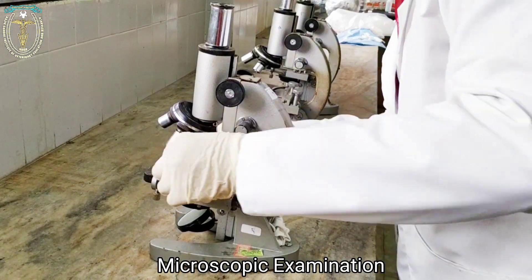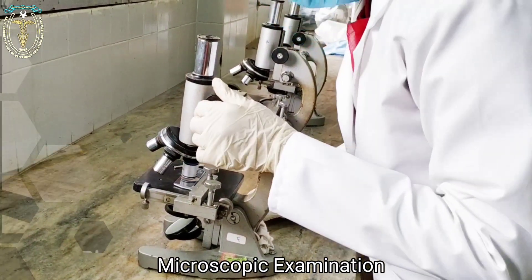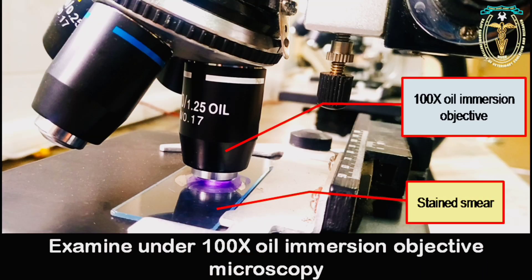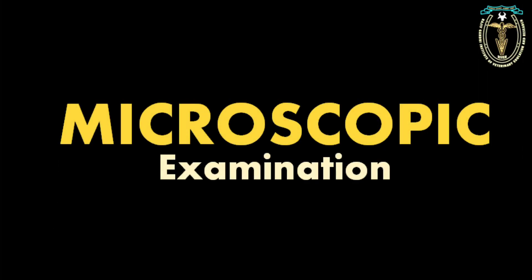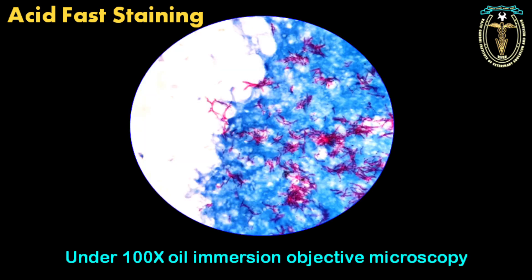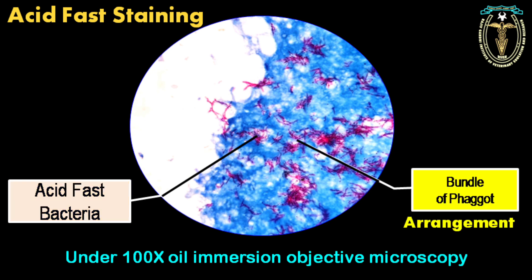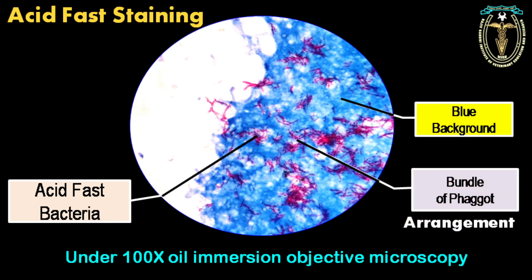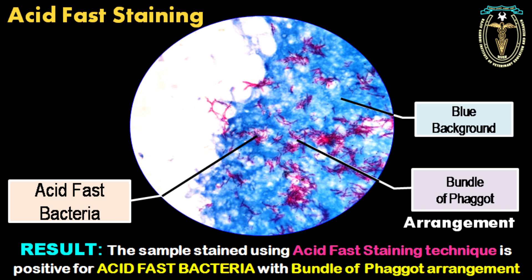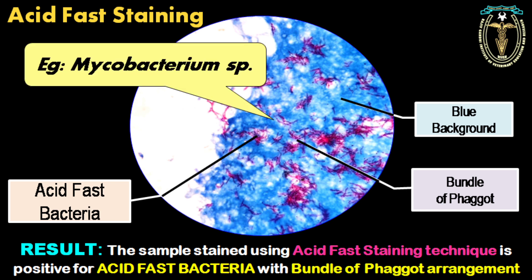The microscopic examination. Place the stained slide over the stage. Examine the slide under 100x oil immersion objective microscopy. On microscopic examination following the acid fast staining technique, the acid fast bacteria stain pink — they are slender rods arranged in bundle of faggot arrangement. Due to the methylene blue counter stain, the background is stained blue. This gives a good contrast for the acid fast bacteria in pink. So, the result is written as: the smear prepared from the sample, stained using the acid fast staining technique, is positive for the acid fast bacteria with the bundle of faggot arrangement. The example of bacteria is the mycobacterium species, which possesses this type of microscopic feature on acid fast staining technique.